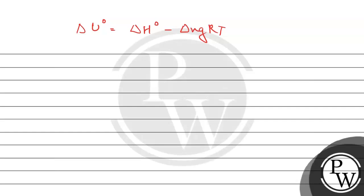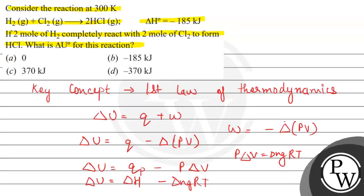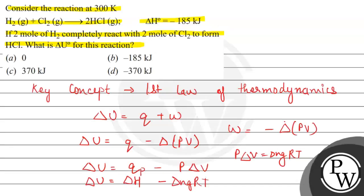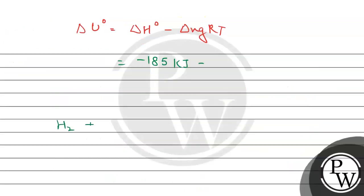the formula which we have to use in this question. And now we will use the values. ΔH° value given is minus 185 kilojoule. And for ΔngRT value, we need to look at the given equation: H2 plus Cl2 leads to the formation of 2 HCl, and these all are gases.